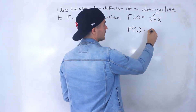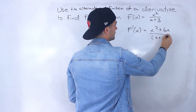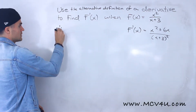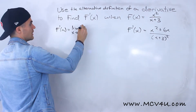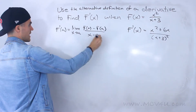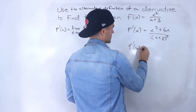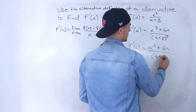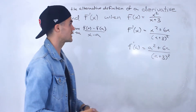The answer we got was x squared plus 6x over x plus 3 squared. Using the alternative definition — the limit as x approaches a of f of x minus f of a, all over x minus a — we should get that same value. Everything will be in terms of a, so our final answer should just be that expression with x values interchanged with a values.